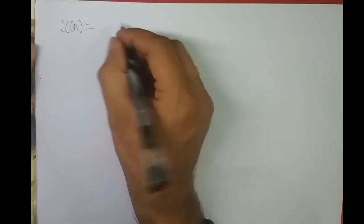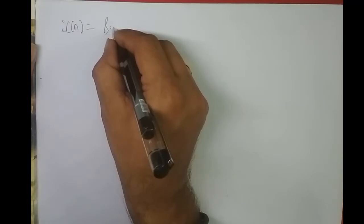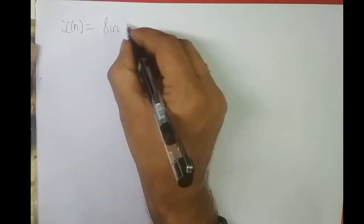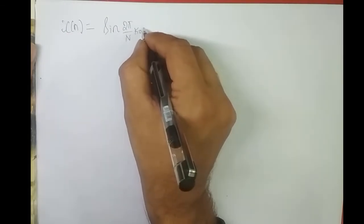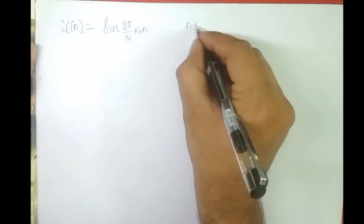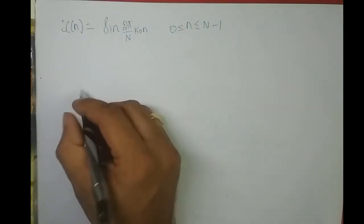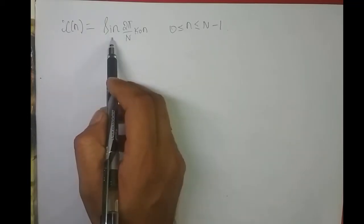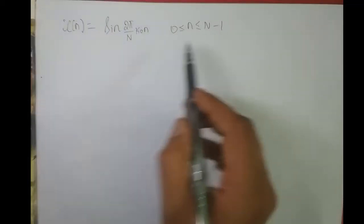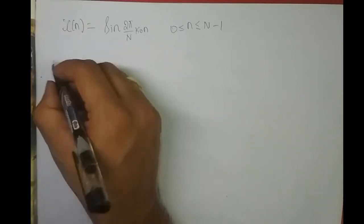We will try to find the N-point DFT of x[n] = sin(2π/N · k₀n) for n varying from 0 to N minus 1.